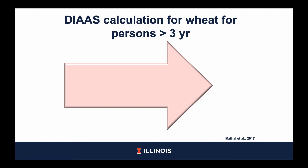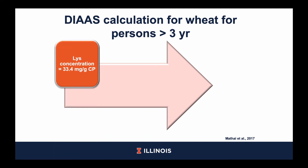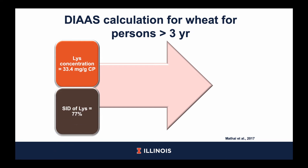Now, to help make this calculation a little clearer, I will walk you through an example. We will determine DIAAS for wheat for persons older than three years. Wheat is a cereal grain and we know that cereal grains are first limiting in lysine, so for the sake of simplicity I will only be showing the calculation for lysine. However, it is important to note that all indispensable amino acids are required for this calculation. The amino acid concentrations are analyzed in wheat and it is observed that the concentration of lysine is 33.4 mg per gram of crude protein. Next, wheat is fed to a cannulated pig and the SID of lysine is determined to be 77%. The concentration of lysine in wheat is then multiplied by the SID of lysine, resulting in the concentration of digestible lysine in wheat of 26 mg per gram of crude protein.